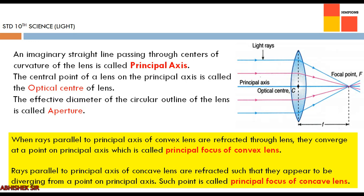The last definition is principal focus, defined differently for each type of lens. For convex lens: when rays parallel to the principal axis converge at a point after refraction, that point is called the principal focus. For concave lens: rays parallel to the principal axis are refracted such that they appear to be diverging from a point on the principal axis — since concave is a diverging lens, rays do not actually meet but appear to meet at the principal focus.